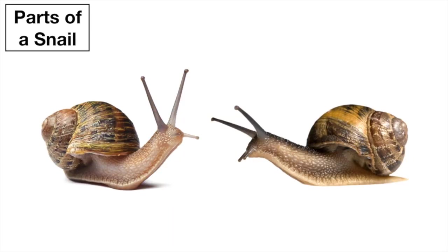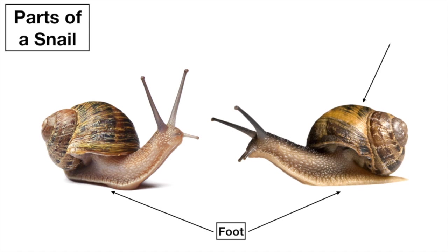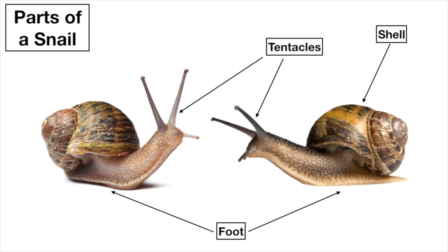Let's review the parts of a snail. First, what are these arrows pointing to? That's the foot that the snail slides along on. What about this next arrow? That's the shell that protects the snail. And these arrows? Those are the tentacles. And last, what do we have here?